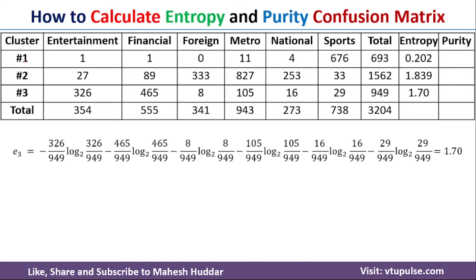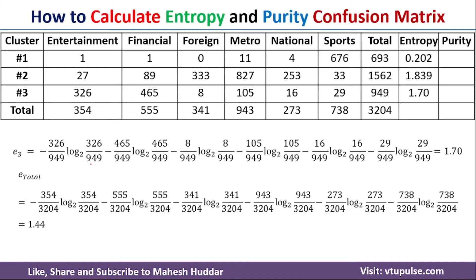Once you calculate entropy for each cluster, the same approach can be followed to calculate entropy for the total dataset. E_total: the number of Entertainment objects is 354 total, so we compute (354/3204) log base 2 (354/3204), and do the same for each class. Once you solve this, you get 1.44 as the entropy for the entire dataset. That covers how to calculate entropy for each cluster and for the entire dataset.